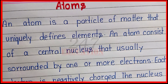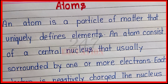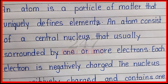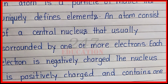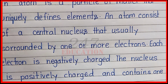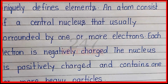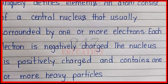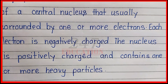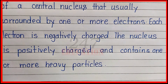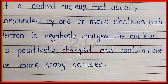An atom is a particle of matter that uniquely defines an element. An atom consists of a central nucleus that is usually surrounded by one or more electrons. Each electron is negatively charged. The nucleus is positively charged and contains one or more heavy particles. Thank you.